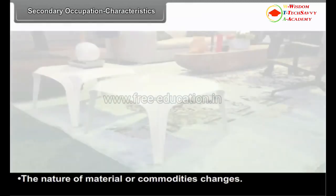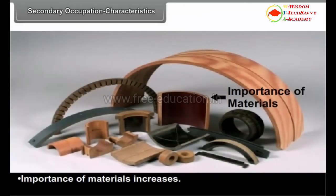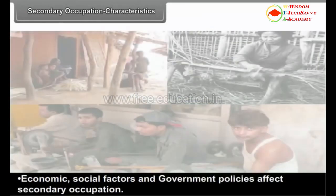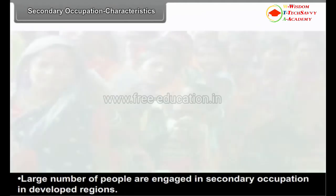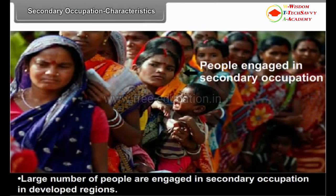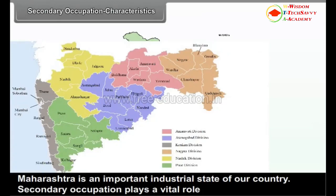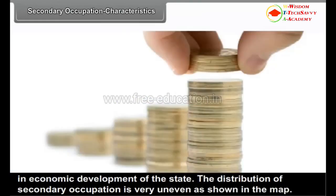Characteristics of secondary occupation: The nature of material or commodities changes. Importance of materials increases. Utility and value increase. Economic, social factors and government policies affect secondary occupation. Large number of people are engaged in secondary occupation in developed regions. Maharashtra is an important industrial state of our country. Secondary occupation plays a vital role in economic development of the state. The distribution of secondary occupation is very uneven as shown in the map.